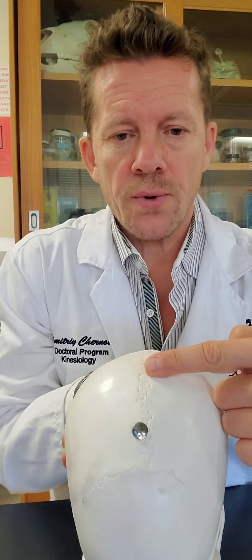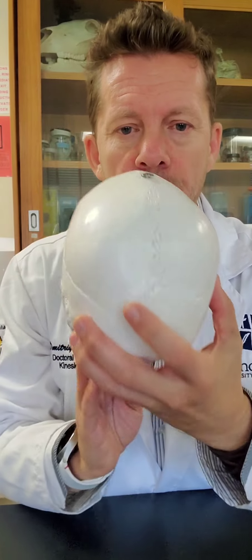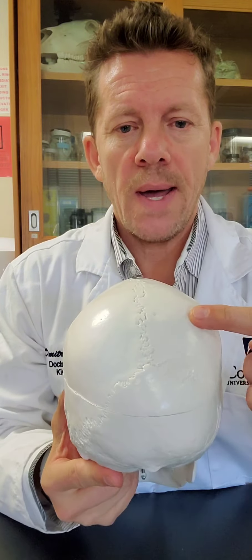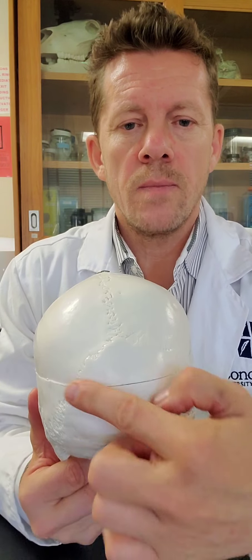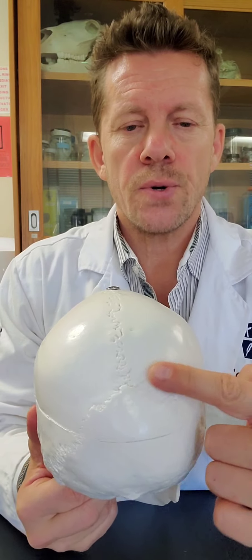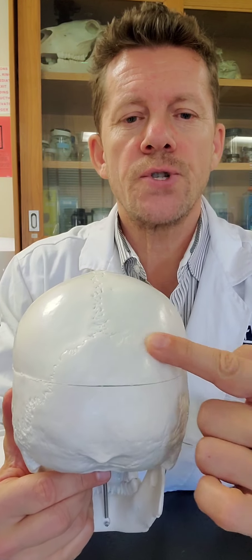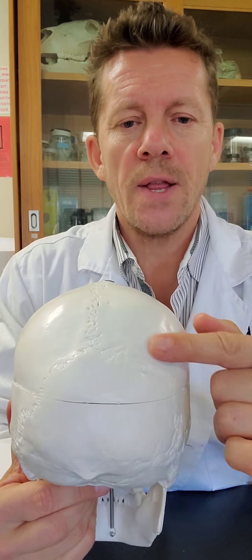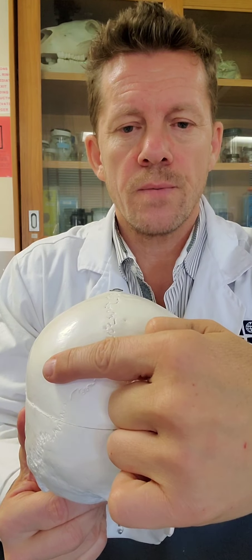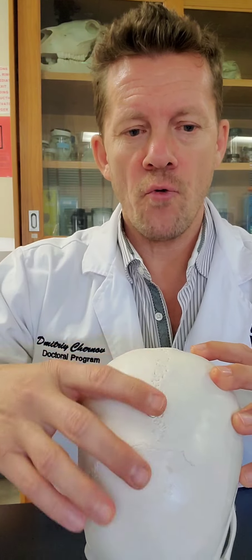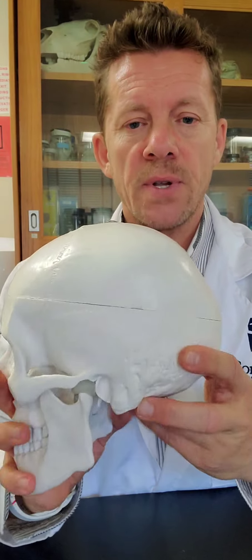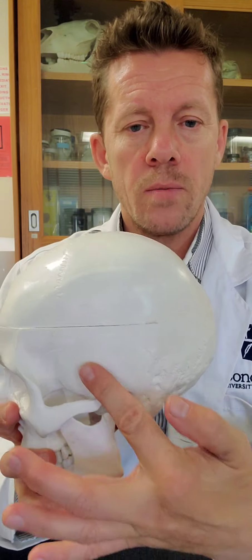That suture between the parietal bones is called the sagittal or mid-sagittal suture. Looking posteriorly, the parietal bones also articulate with the occipital bone via the lambdoid suture. The parietal bones form the side and the cranial roof.